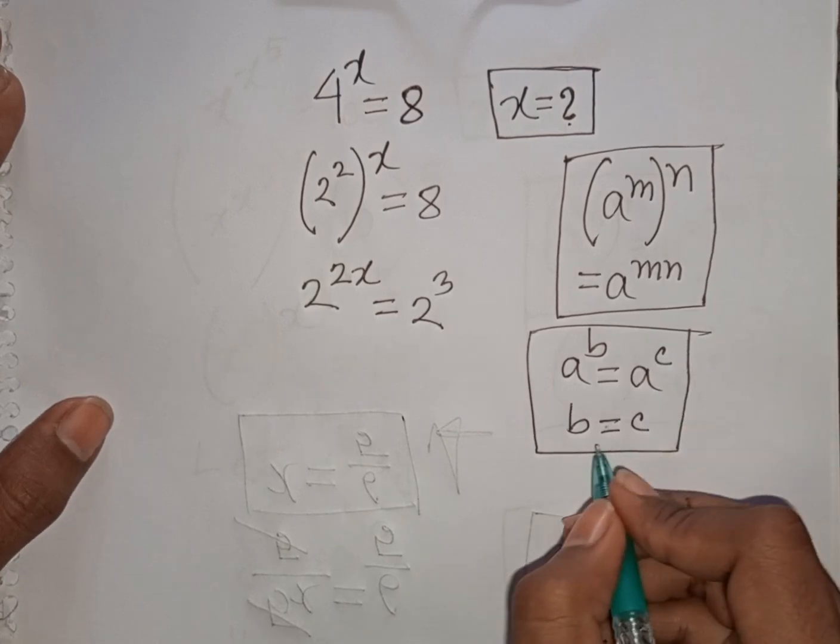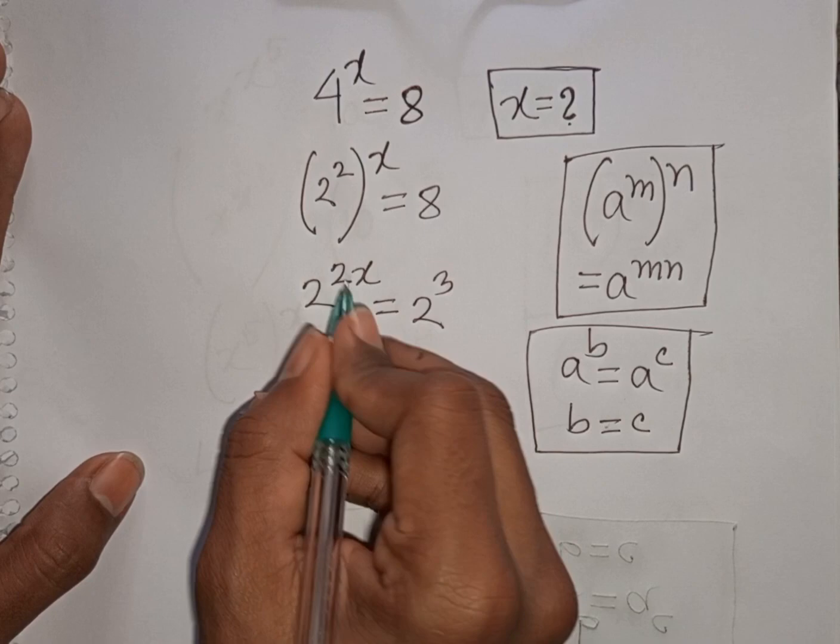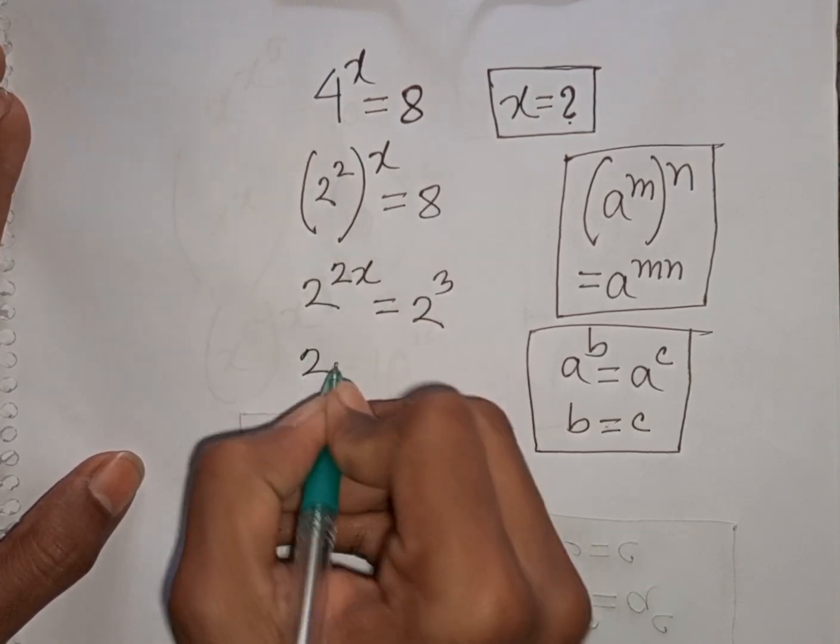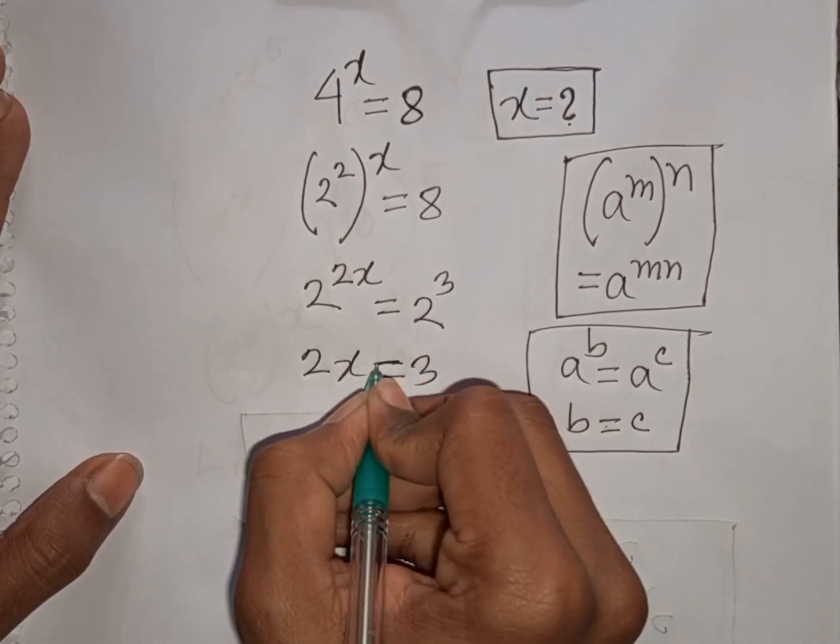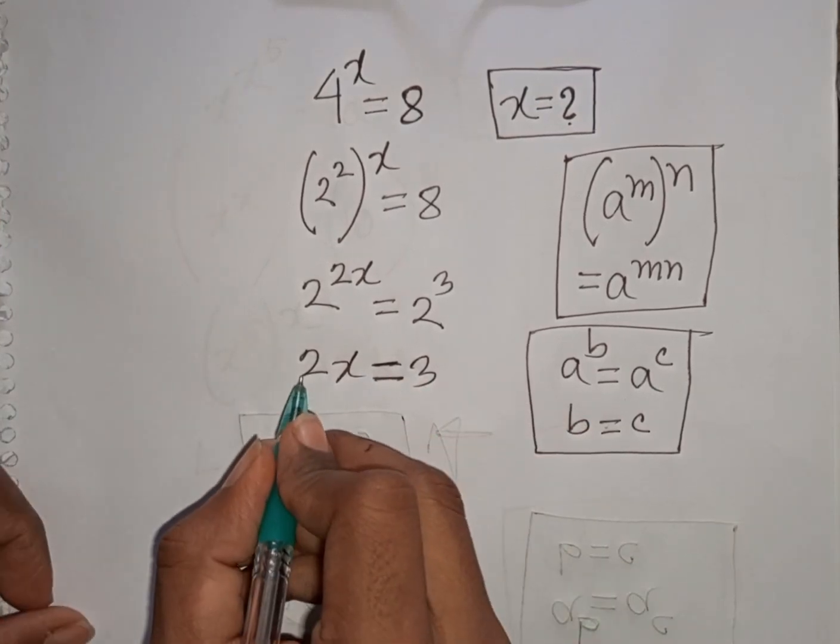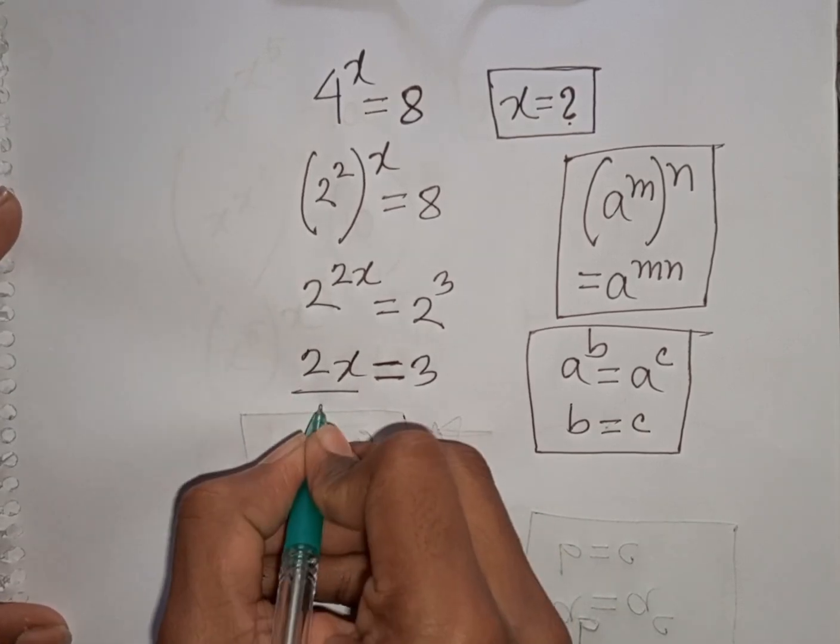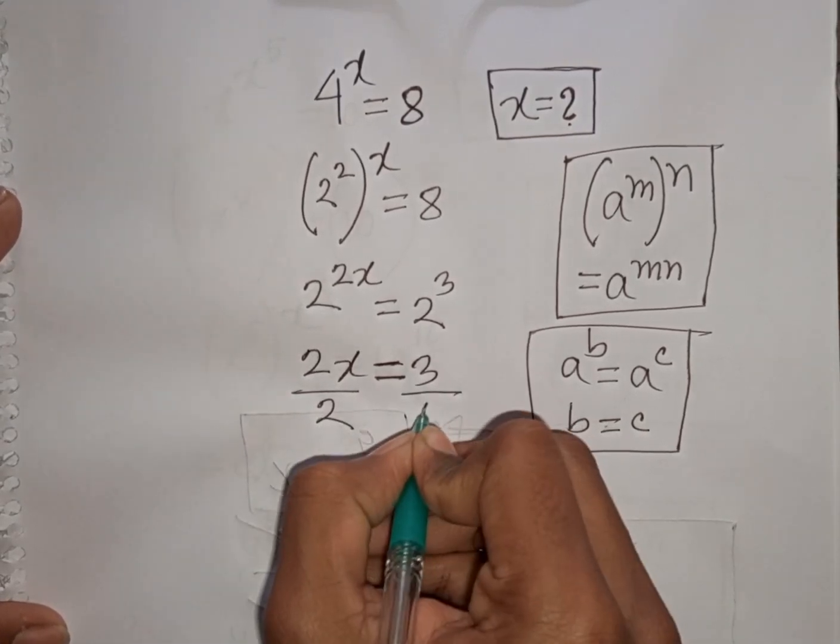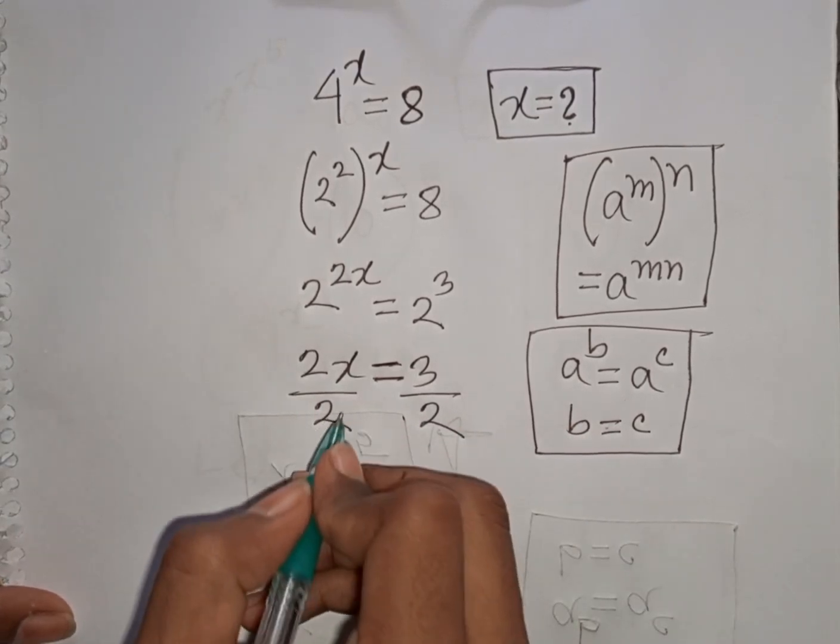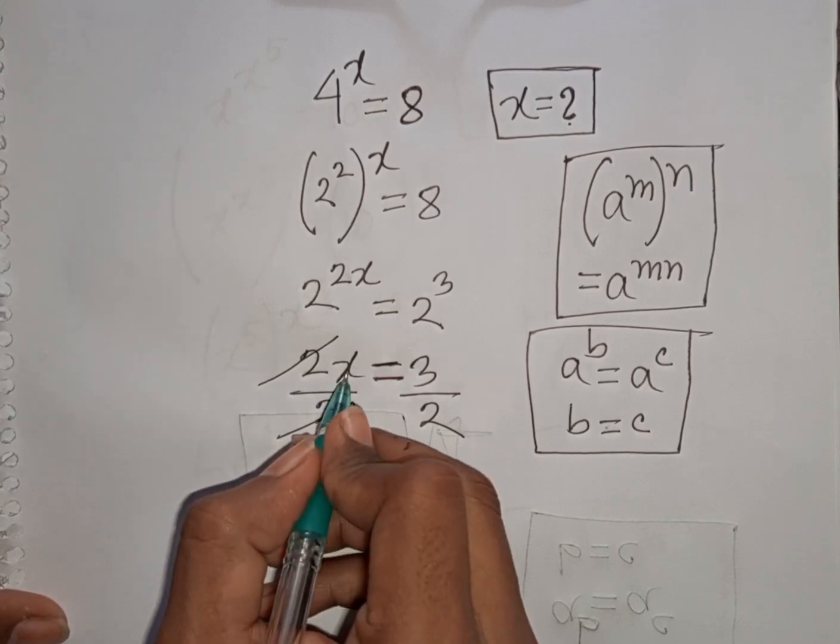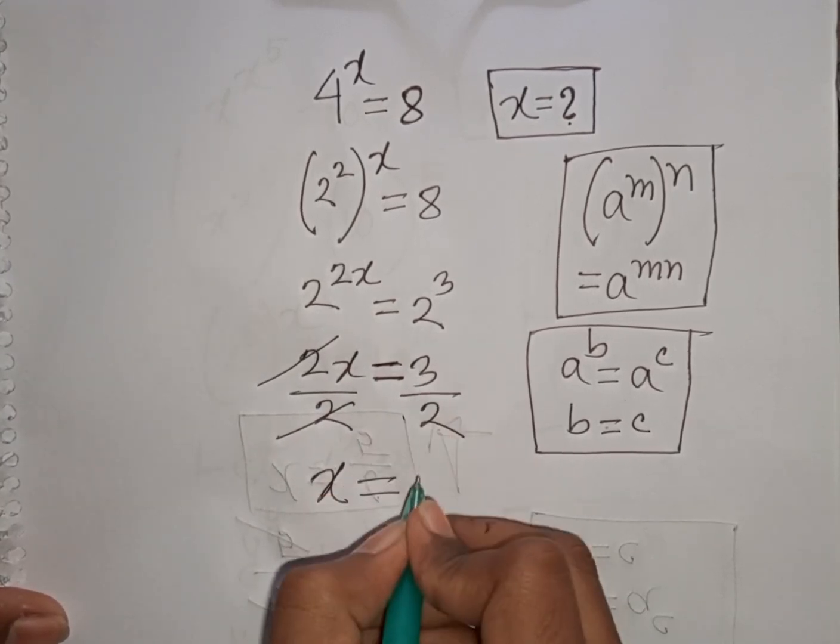So according to this rule I can compare here. Now 2 will be cancelled, so power will be equal to power, that means 2x will be equal to 3. Now we divide by 2 on both sides because we need the value of x. So divided by 2, divided by 2. Now we see this 2, this 2 will be cancelled, so here x is equal to 3 by 2.